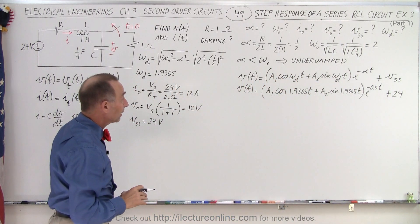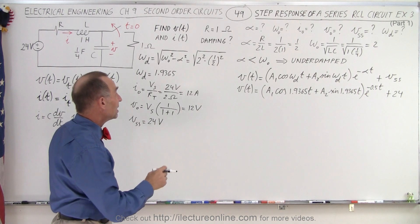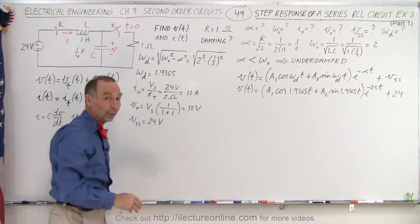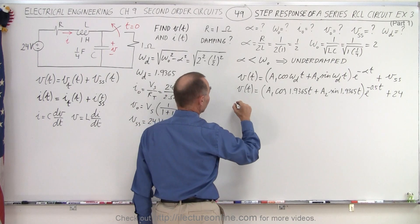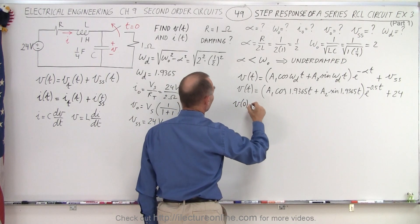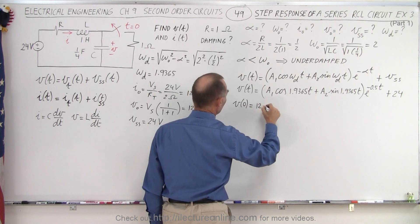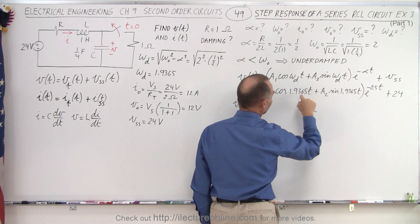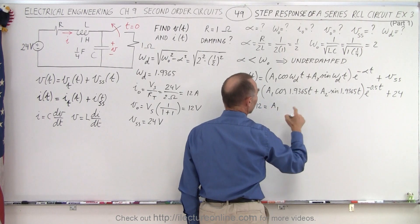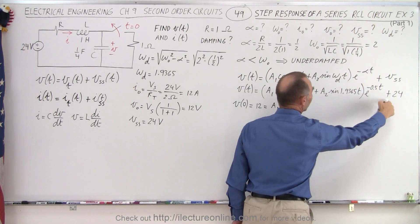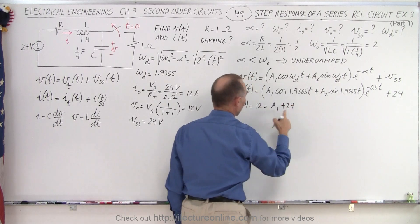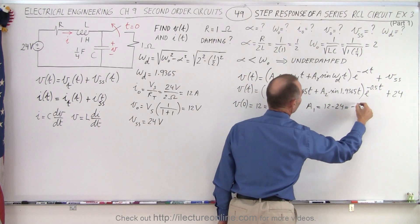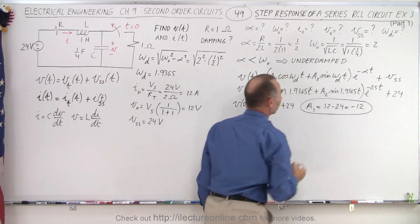We need to find A1 and A2. Using the initial condition V(0) = 12 volts: when t equals 0, the sine term goes to 0, the cosine goes to 1, and e to the 0 equals 1. So we get 12 equals A1 times 1 plus 24. Subtracting 24 from both sides gives A1 equals 12 minus 24, which equals negative 12.